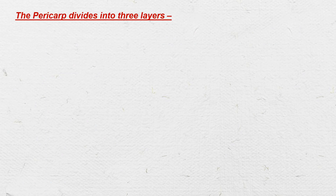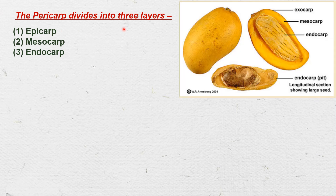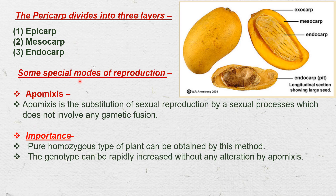Apart from this, there are some special modes of reproduction in flowering plants. Vegetative and sexual reproduction are the common methods, but under certain conditions, reproduction also occurs without the process of fertilization. First is apomixis — 'apo' means without and 'mixis' means mixing. Apomixis is the substitution of sexual reproduction by asexual processes which do not involve any gametic fusion.